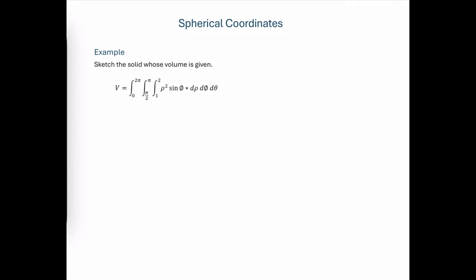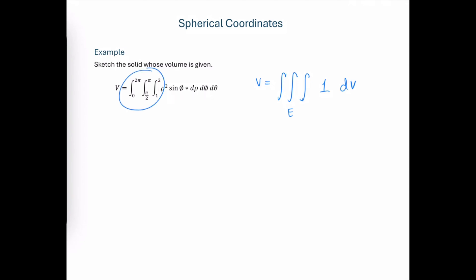Sketch the solid whose volume is given. Recall that in order to determine the volume of a solid, we can use a triple integral over that solid domain region with the integrand of positive 1 dV. In spherical coordinates, all of this together makes up the value dV, and so we can focus on those limits of integration in order to determine the solid that we're looking for.